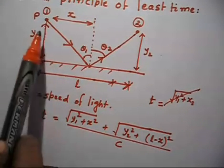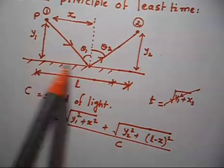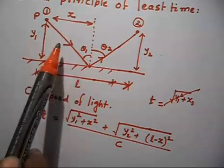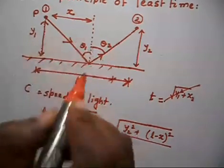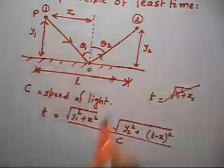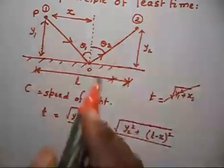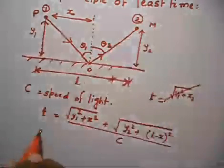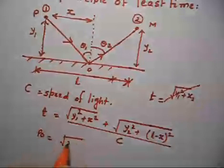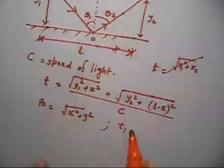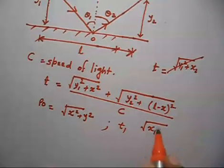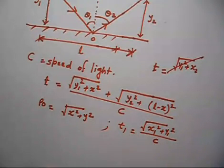This is obvious. The distance from point 1 to the mirror point O is √(X² + Y1²). So the time T1 from P to O is √(X² + Y1²) / C. Similarly, the distance from O to point 2 is √((L−X)² + Y2²).